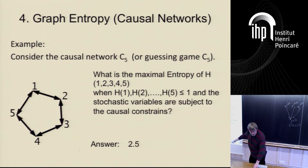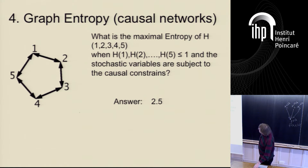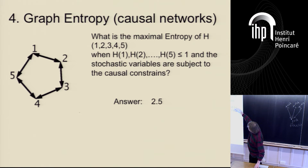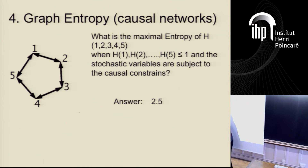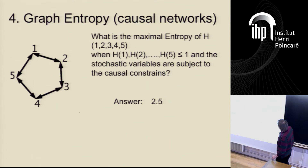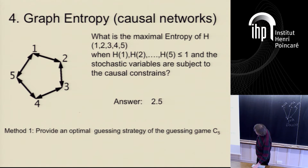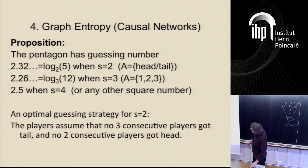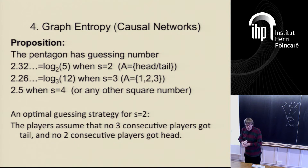For C5 there is a guessing strategy of 2.5. For alphabet size 2, they can achieve 5 fixed points; taking the base-2 logarithm gives something less than 2.5. For alphabet size 3, by computer search it turns out to be 12 states (about 2.26 in log terms). For alphabet size 4 you can achieve 2.5. So 2.5 is the optimal guessing number, achieved when the alphabet size is a perfect square.